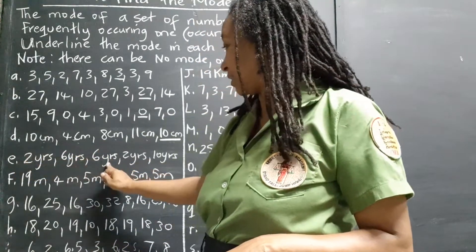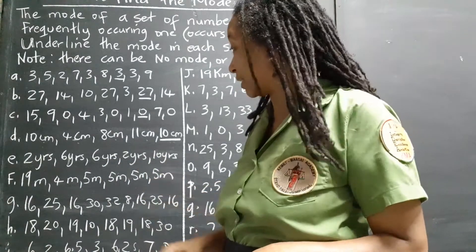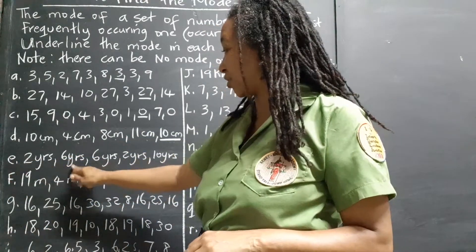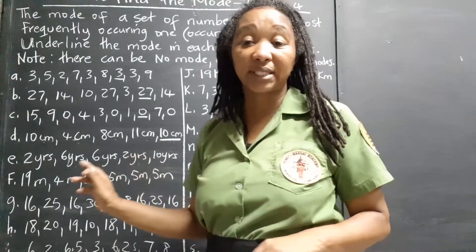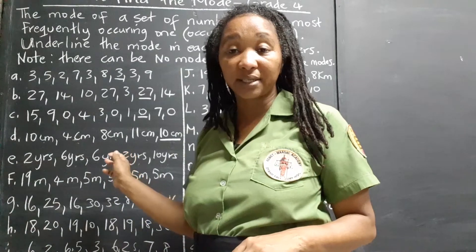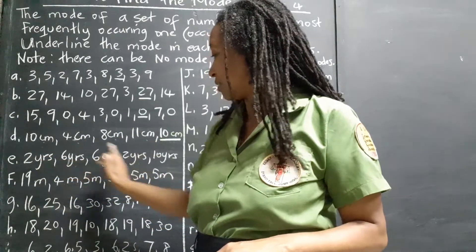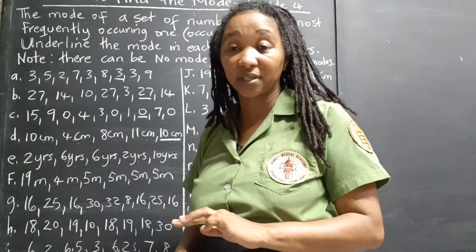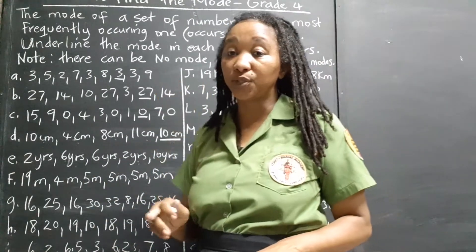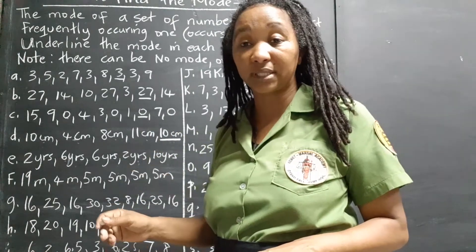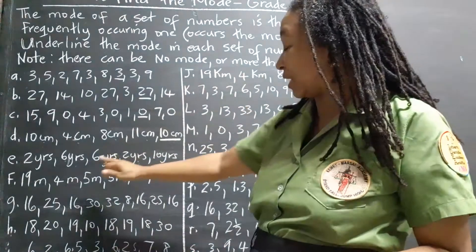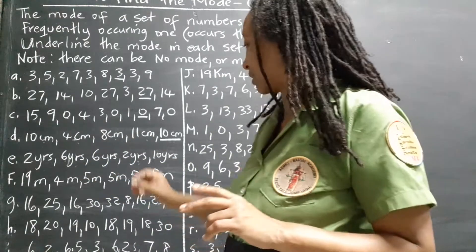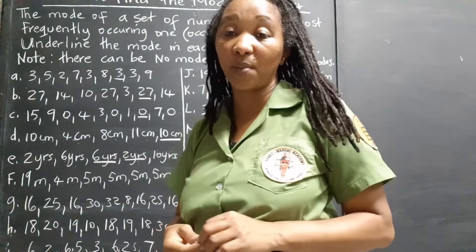Set E: 2 years, 6 years, 6 years, 2 years, 10 years. This one is interesting — two of the quantities are repeated. The two years is repeated and the six years is repeated. There are two occurrences of two years and two occurrences of six years. So, as we noted earlier, there can be more than one mode. Both two years and six years are the modes for this set.